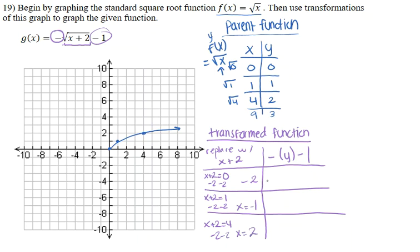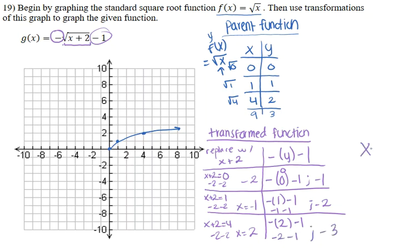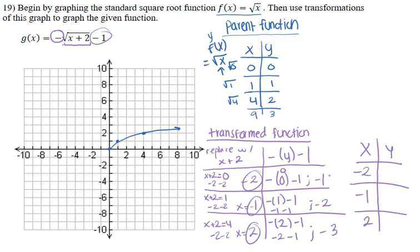For the y values, we compute negative times the parent y value, minus 1. So: -(0) - 1 = -1; -(1) - 1 = -2; and -(2) - 1 = -3. Our new transformed x values are -2, -1, and 2, and the corresponding y values are -1, -2, and -3.